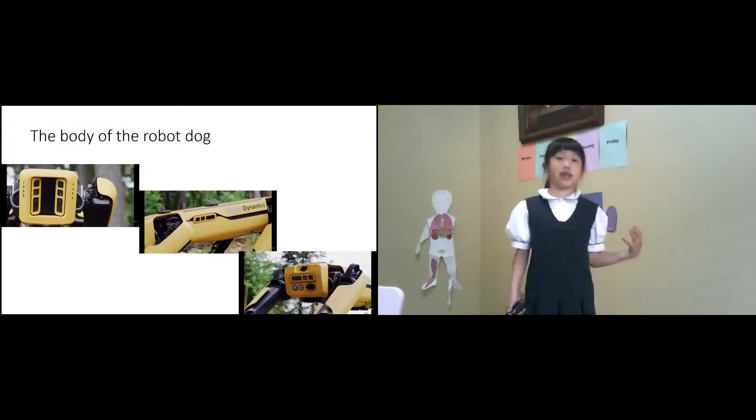Here is the body of the robot dog. It has five cameras. On the face, the front, it has two cameras. On each side it has one camera, and on the back it has one camera too.